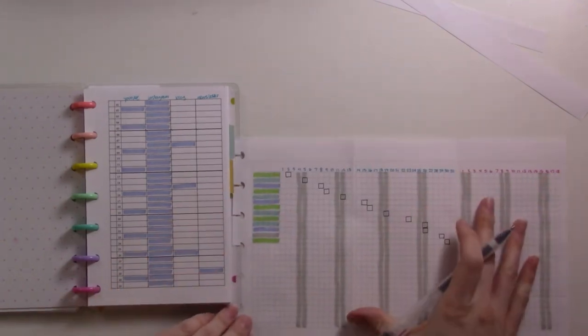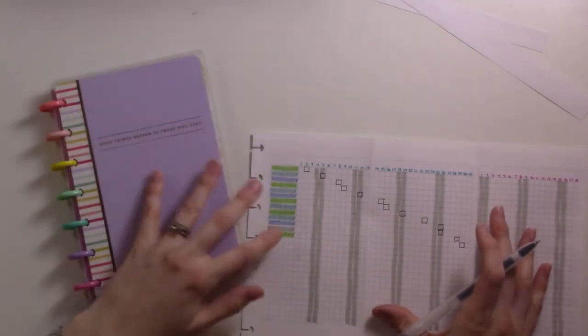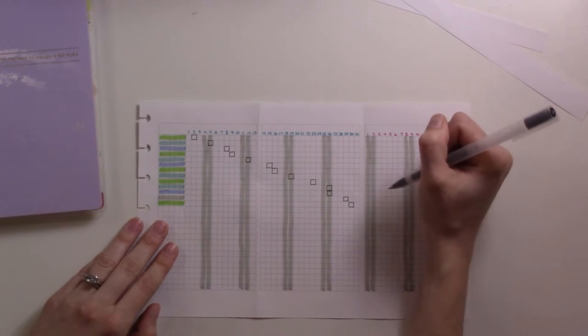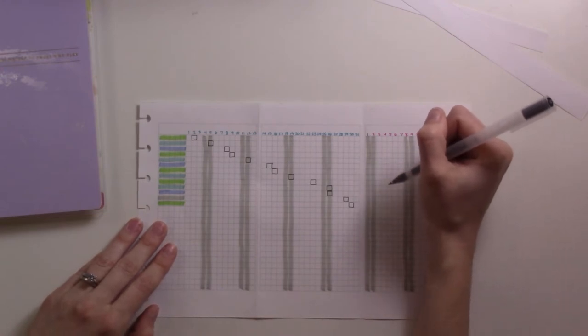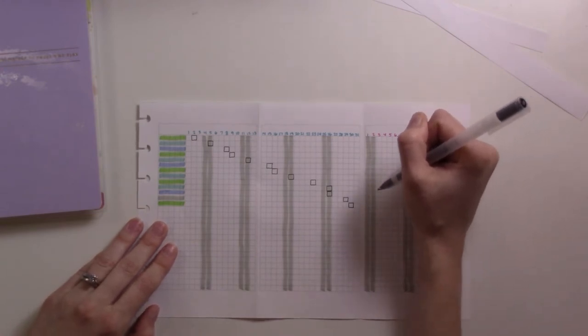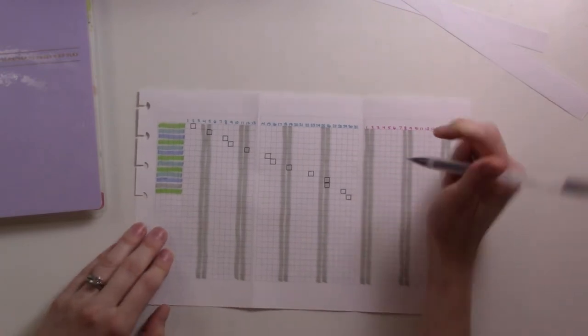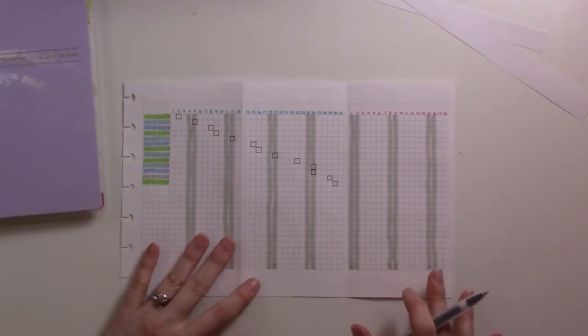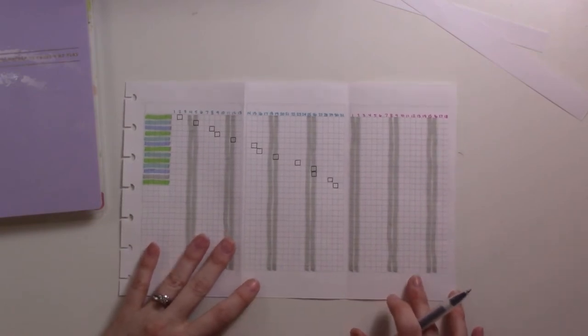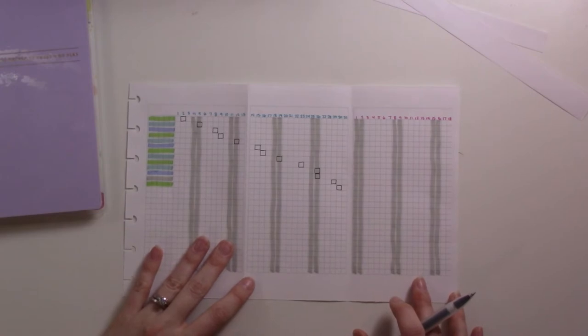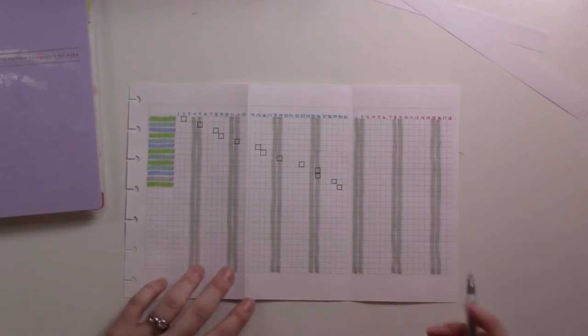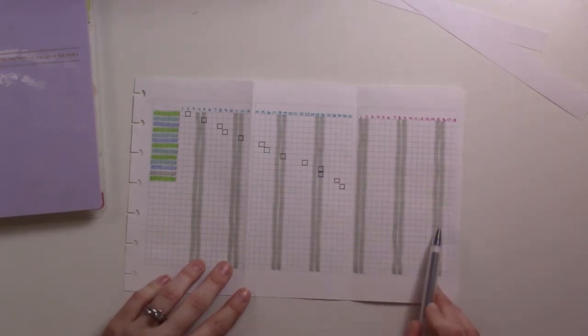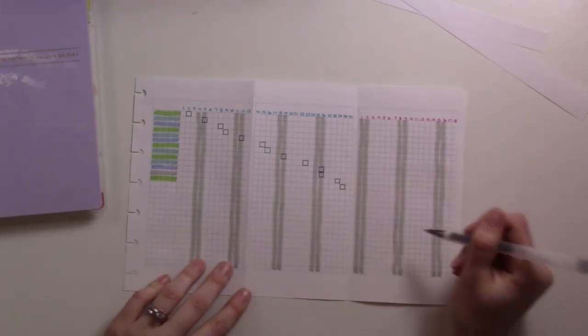So the idea here is to be able to visualize how far in advance I should be working on stuff. And I don't yet—I will definitely be updating you at some point as to whether this works or not. Today I'm just setting it up. Do let me know if you have used Gantt charts before in your work or wherever.